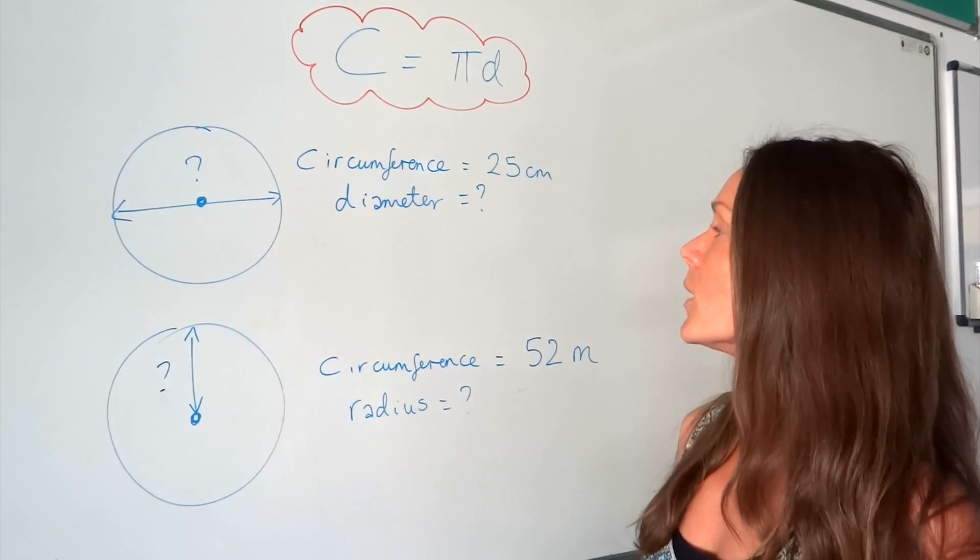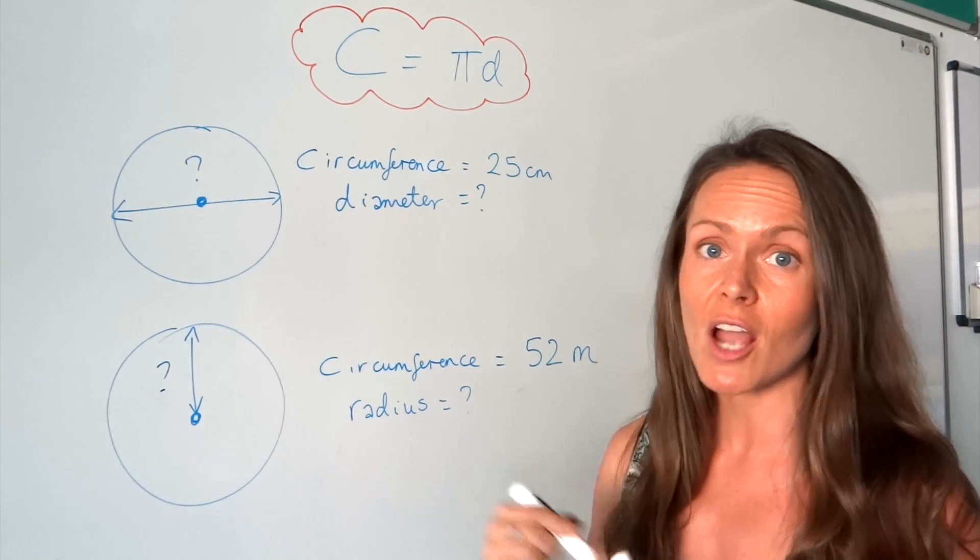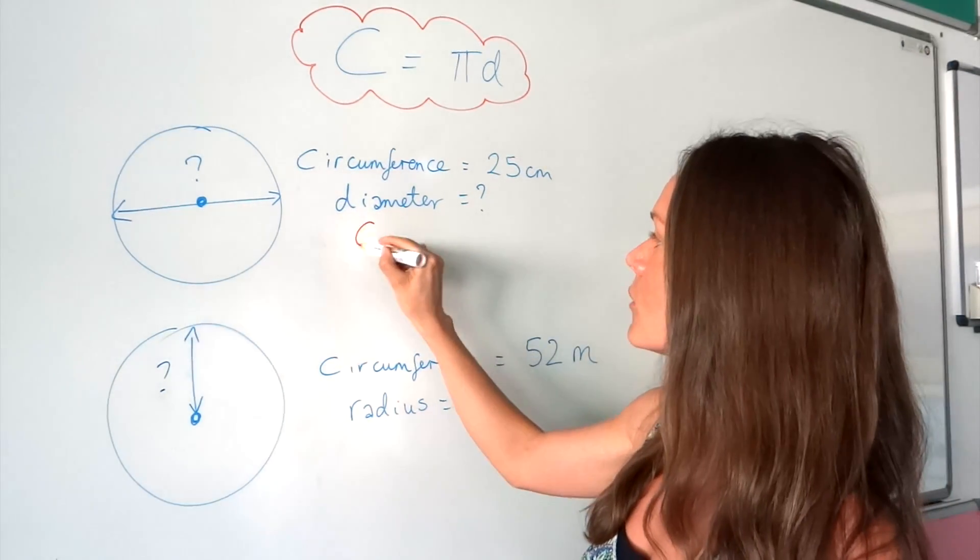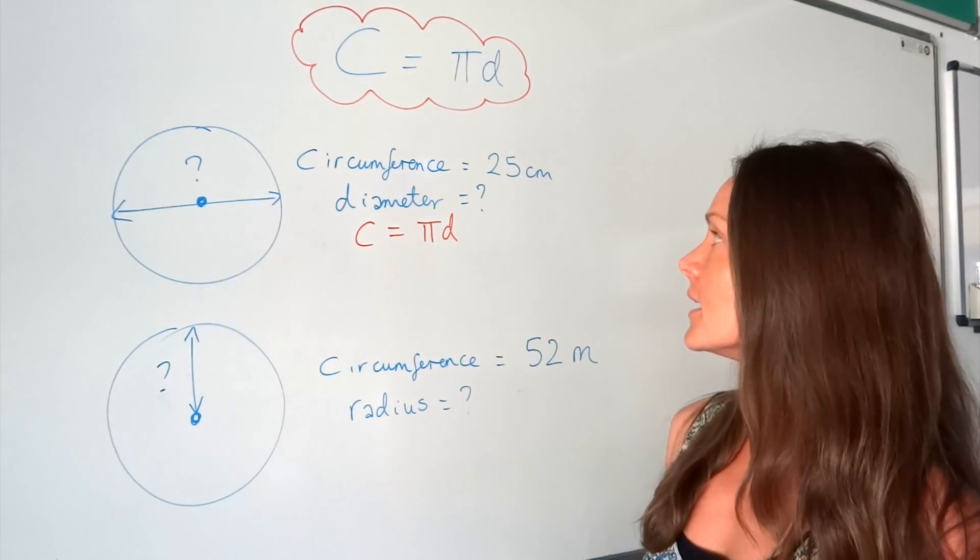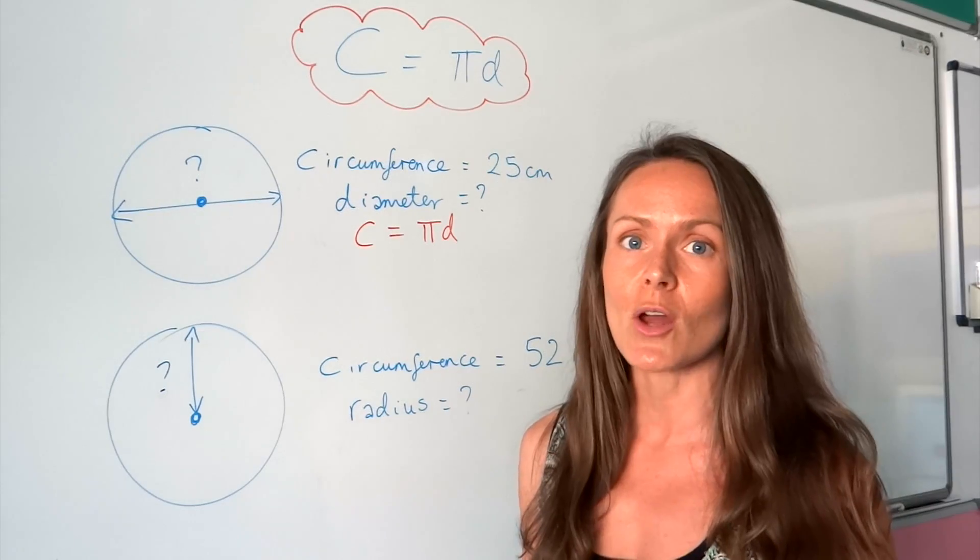When we have these questions, the best thing to do is to start by writing down the formula for circumference, π d. Then substitute in the information that you know.